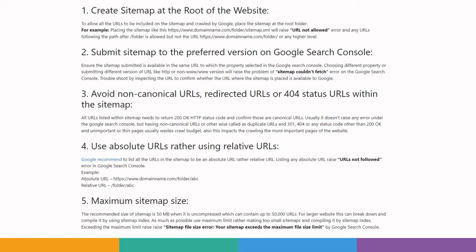Number one — create the sitemap at the root of the website. If you have a domain like example.com, you need to place the sitemap right at the root. If you place it under a subdirectory, it is not wrong, but all the URLs listed under that folder will not be accessible within the sitemap, and Google will raise a 'URL not allowed' error. Check that you are uploading your sitemap at the root directory, not any other subfolder.